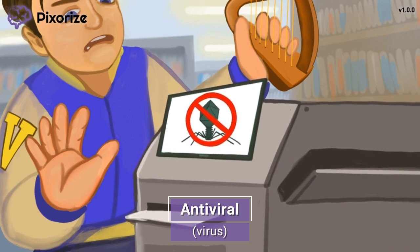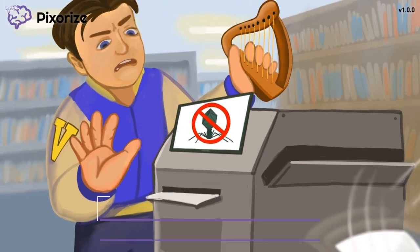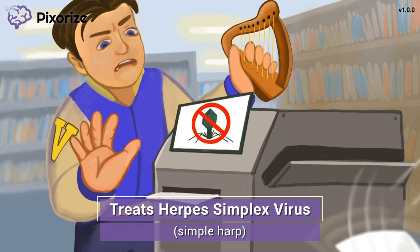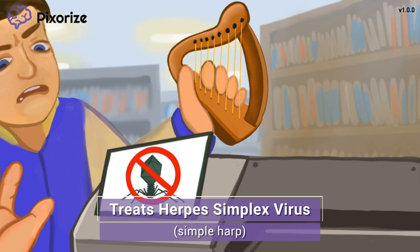Exactly what viruses does acyclovir treat? The boy is going to be late to band practice — he was supposed to bring his sheet music, but with the printer virus, that's not going to happen. Maybe he can share music with another person who plays the harp. See that simple harp in his hand? This simple harp is our symbol for herpes simplex virus — harp for herpes and simple for simplex. There are actually two types: herpes simplex 1, which is oral herpes (cold sores), and herpes simplex 2, which describes genital herpes. Acyclovir treats both types, so when you see herpes simplex on test day, know that acyclovir is the drug to give.